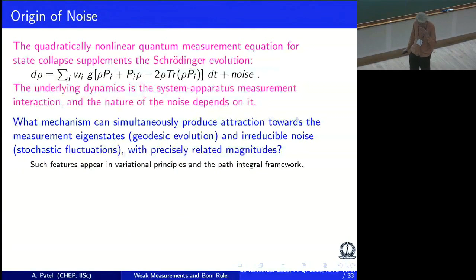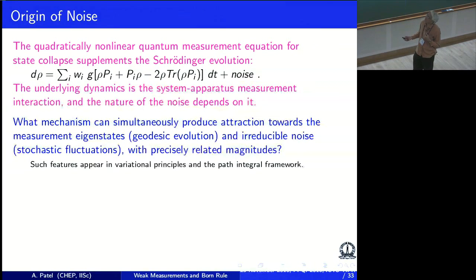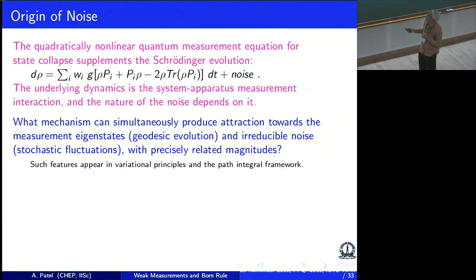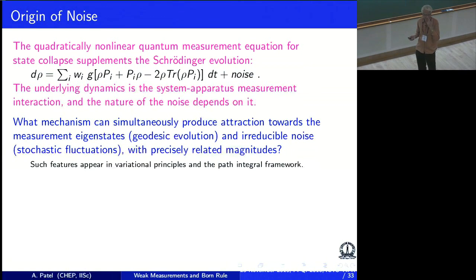Now for the final part — and this is the part which I do not have complete answers to, but I will say whatever I can. I have a process where there is a geodesic evolution and there is a noise. It describes the system-apparatus interaction very well, reproduces the Born rule, and all that happens when the normalization of the geodesic term is related to the normalization of the noise in a well-defined mathematical relation. This says there has to be a common origin of the two — just like the fluctuation-dissipation relation which Einstein pointed out in kinetic theory. What kind of mechanism can relate the geodesic evolution and the stochastic fluctuations with magnitudes that are precisely related? This kind of structure is very common in path integrals and variational principles, so there should be some underlying dynamics — and this is a strong hint that such a dynamics exists.